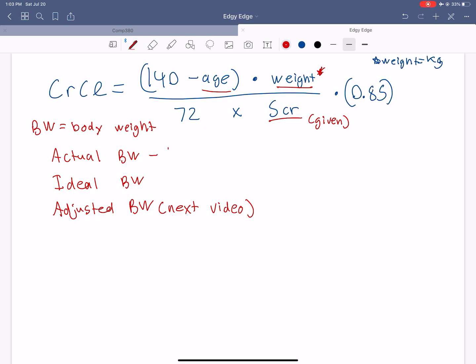So actual body weight is pretty self-explanatory. They're literally their actual weight. So an ideal body weight, I would say, it's basically what they should be weighing in as.